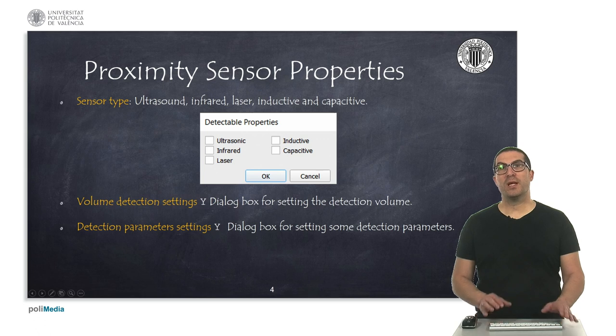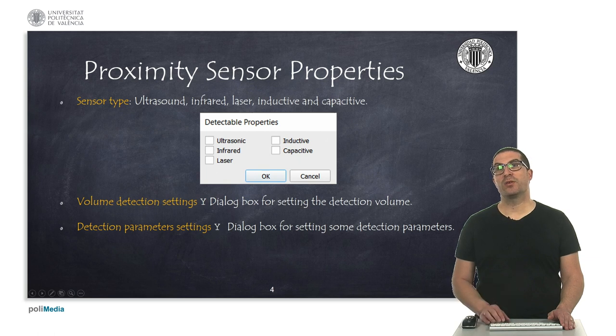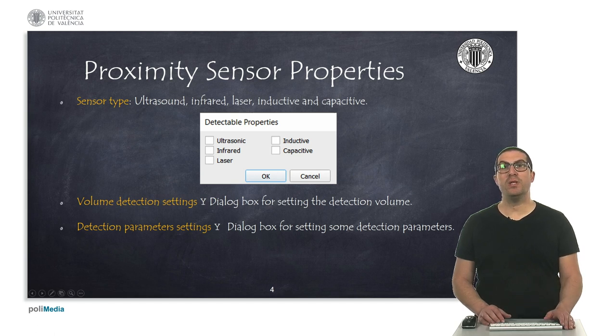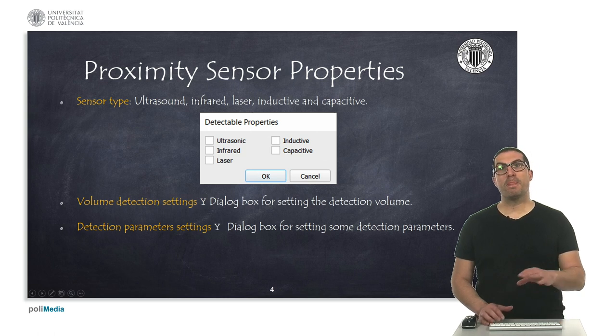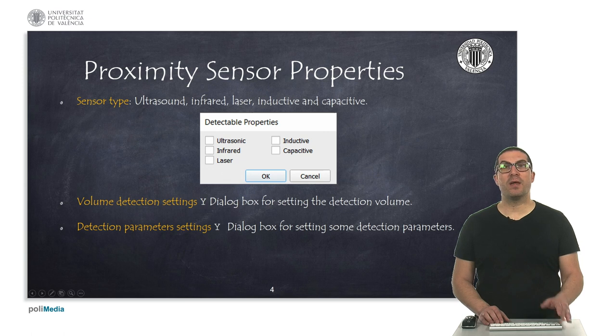Detectable objects can be detected only by certain types of sensors, which can be useful under certain conditions. For instance, a hall effect sensor detects metallic objects, so you can set that a specific object is only detectable by inductive sensors, and then it cannot be detected with other types of sensors.